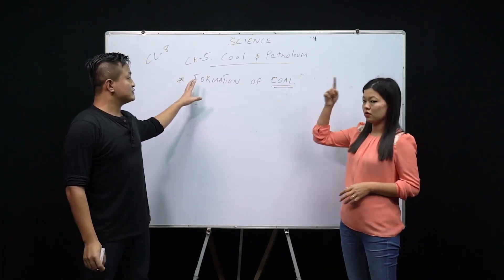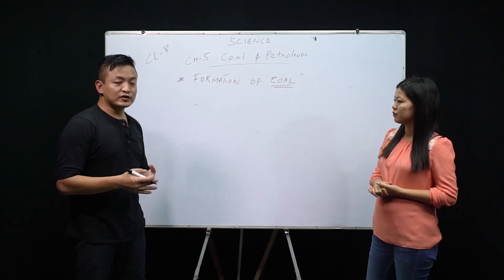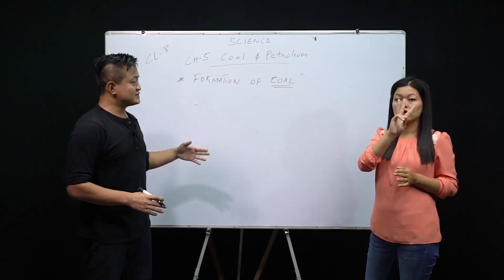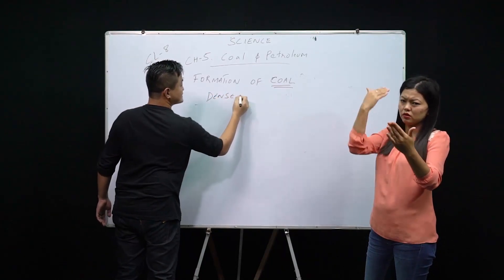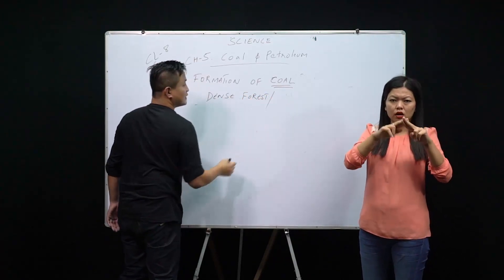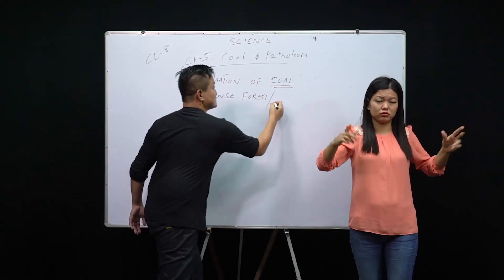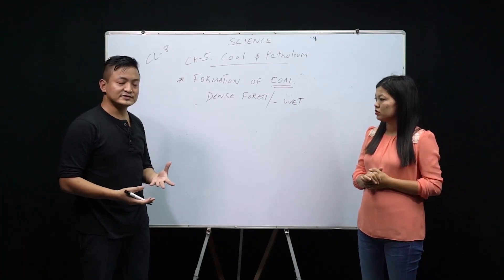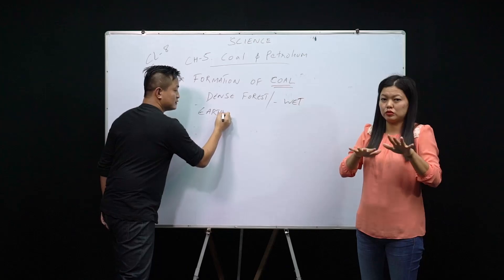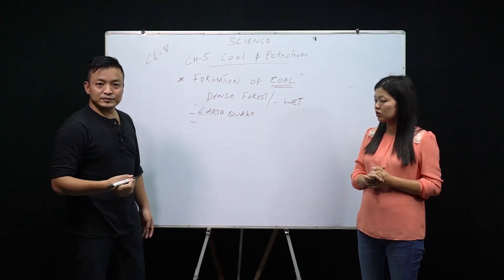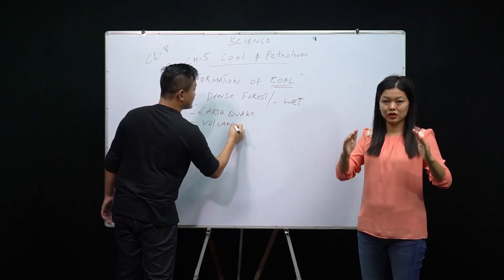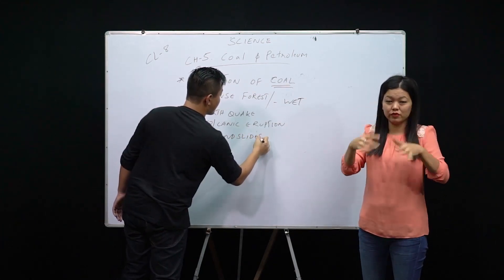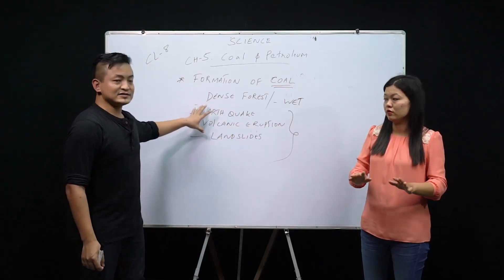Now we will discuss the formation of coal. About 300 million years ago there was a dense forest. Due to natural factors such as earthquakes, volcanic eruptions, and landslides, this dense, very wet forest got buried inside the earth's crust or soil.